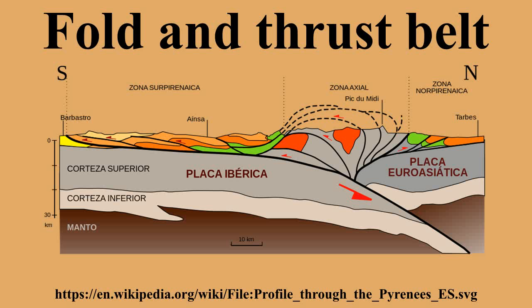Re-entrants are sometimes called embayments. The Zagros Fold-and-Thrust Belt, located in Iran and Iraq, is a young and active deforming belt.